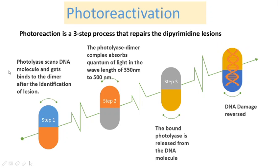In the first step, the photolyase scans the DNA molecule and binds with the dimer after identification of the lesion. Then in the second step, the photolyase-dimer complex will absorb a quantum of light within the range of 350 to 500 nanometers. In the third step, the bound photolyase is released from the DNA molecule, and thus the DNA damage is reversed.